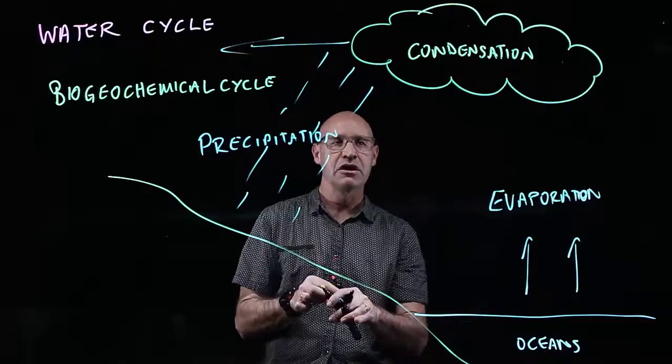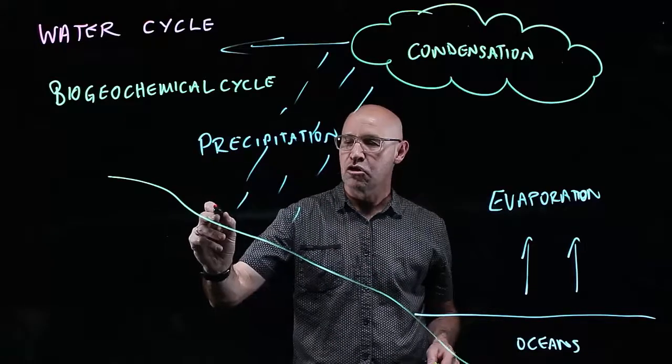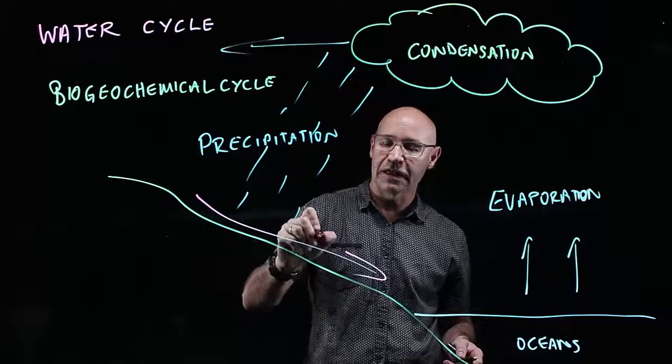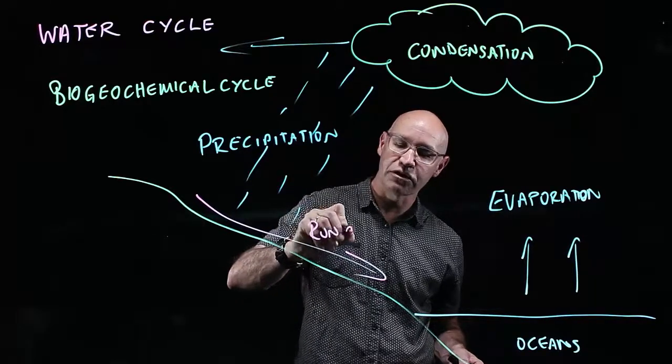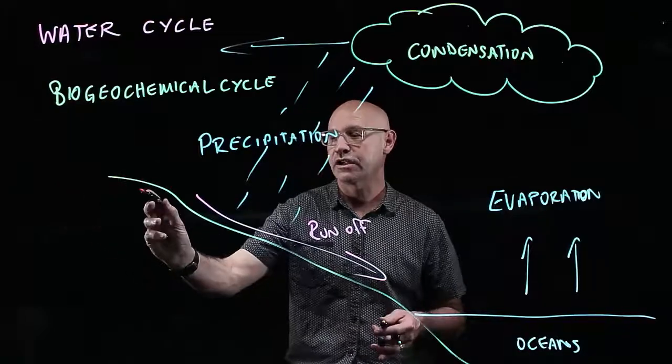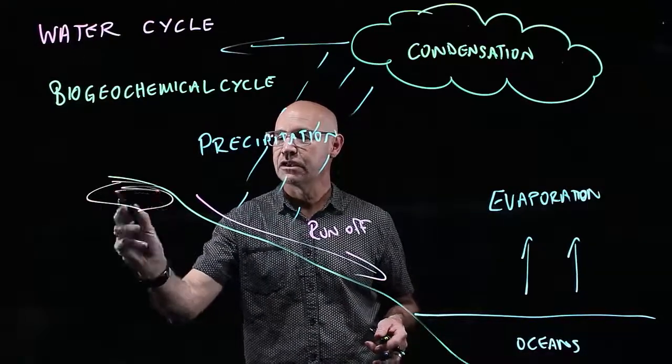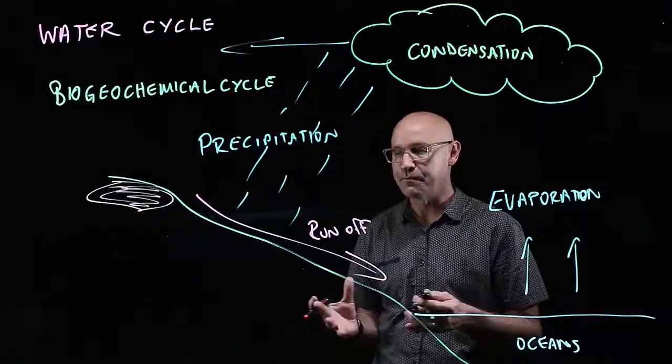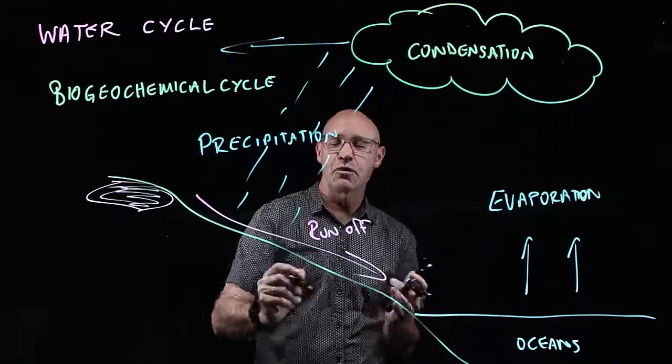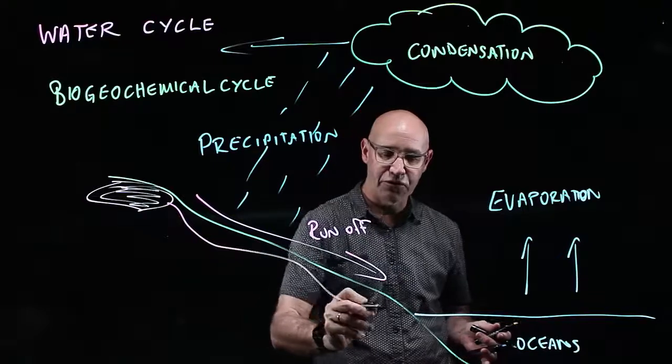From that position, one of a couple of things happens. We can go straight and run off off the land back into the ocean. That's called runoff. Sometimes it gets stored in lakes and freshwater reservoirs. Most of the runoff though is down through rivers back to the ocean.